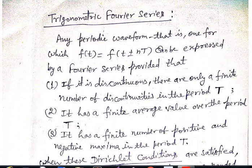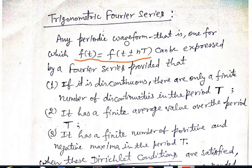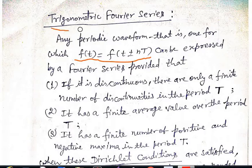Any periodic waveform, that is one for which f(t) = f(t ± nT), can be expressed by a Fourier series. This means the waveform f is periodic with fundamental period capital T, so f(t) = f(t+T) = f(t+2T) = f(t+3T), that is integer multiples of fundamental period T. Any periodic waveform can be represented in terms of trigonometric Fourier series.